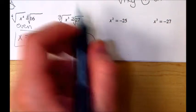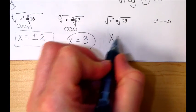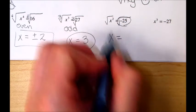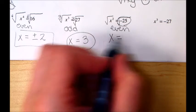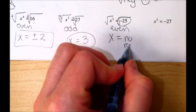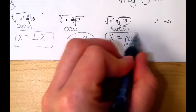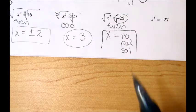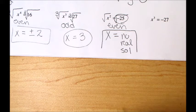What undoes a square? Hopefully you're saying a square root. So this becomes x equals, oh, but look, this is even, right? And we have a negative inside. That means no real solution. I know hopefully from chapter 4 you remember it has an imaginary solution, but right now we're concerned about the real solutions. Evens cannot be negative inside.